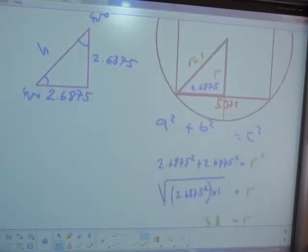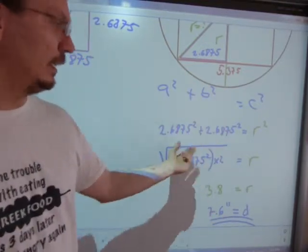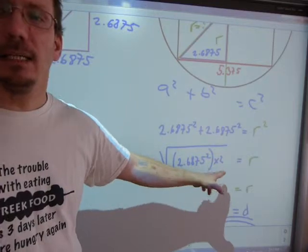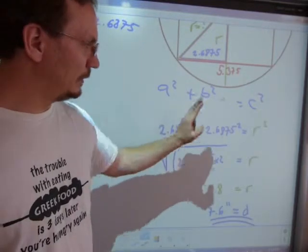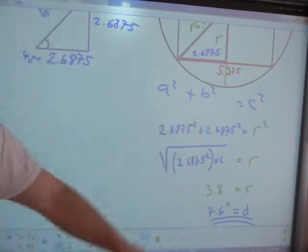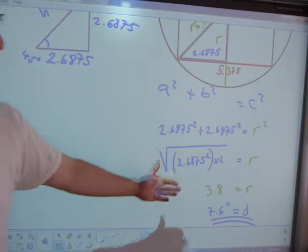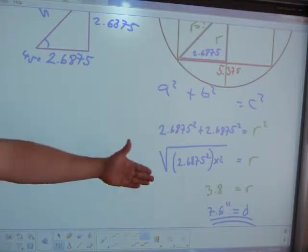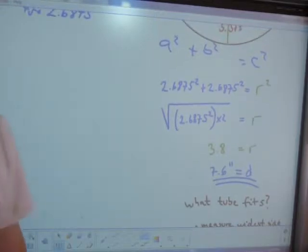The numbers are pretty straightforward from here. You square 2.6875, you square it again, add them — or since they're equal I just wrote times two — and square root it. It's important that the times two happens before square rooting: square it, double it, then square root it, and you get the radius: 3.8 inches. Double it to get diameter from the radius, and that number — 7.6 inches — is the answer to the question: what tube fits this given deck post?